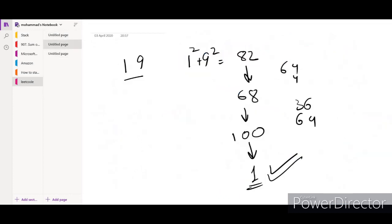Let me try to simulate the process for this particular number 19: 19 then 82 then 68 then 100 then 1. Now there is a slow pointer and a fast pointer. One step slow will move here, fast will move here.